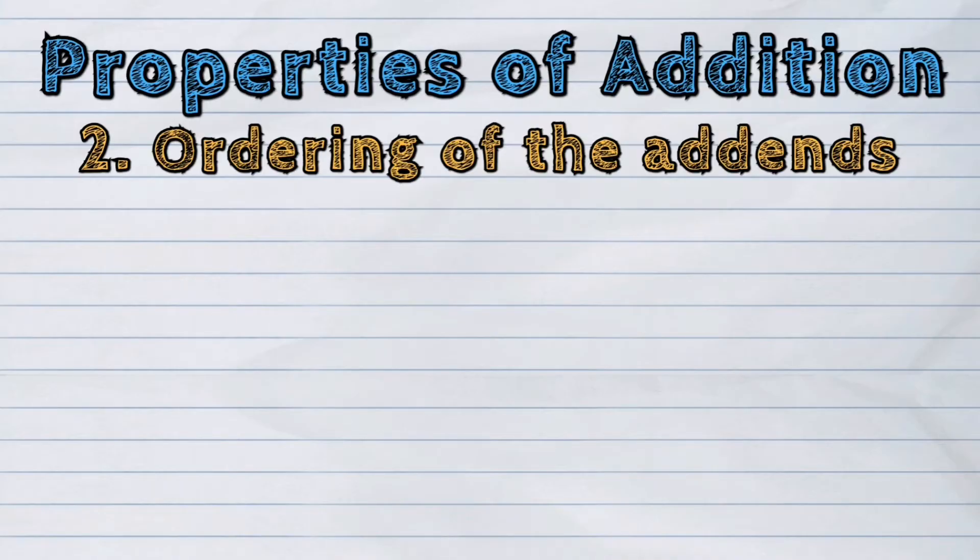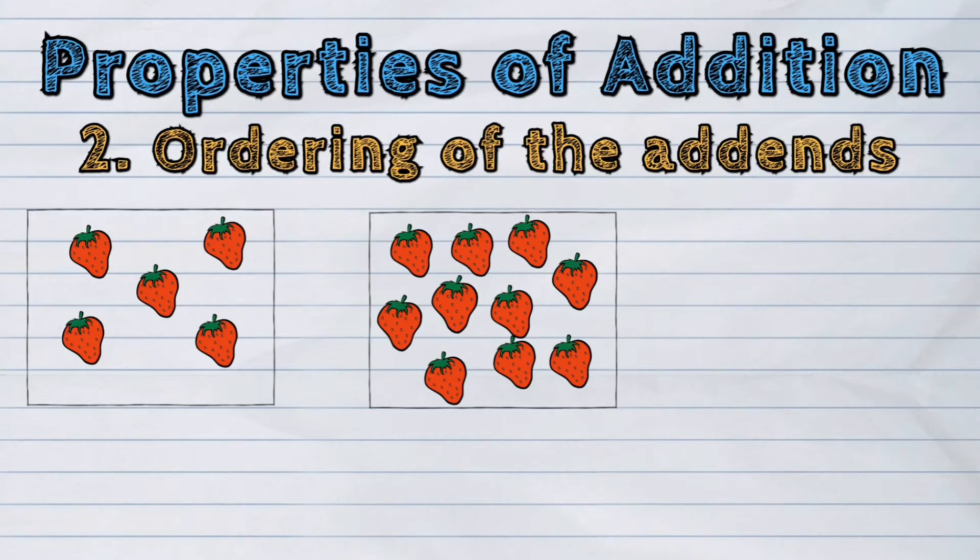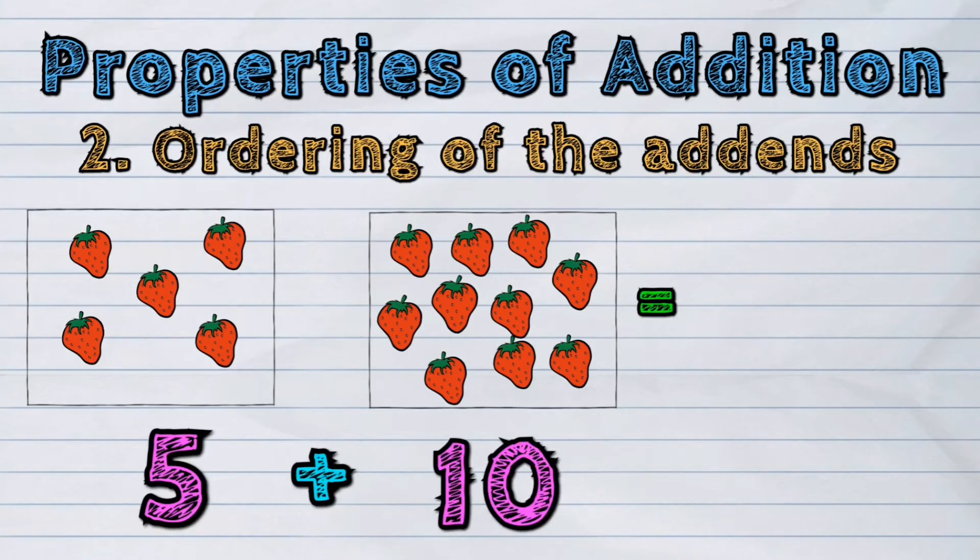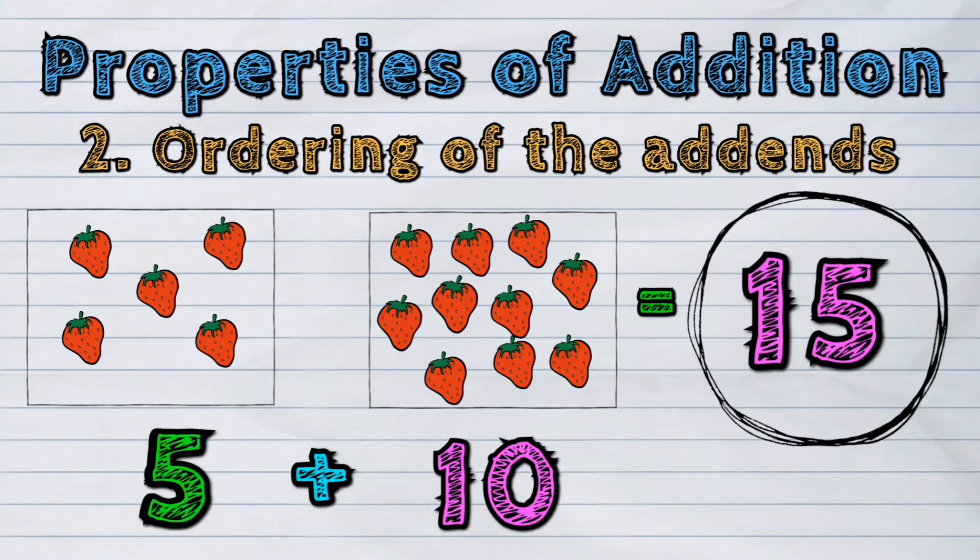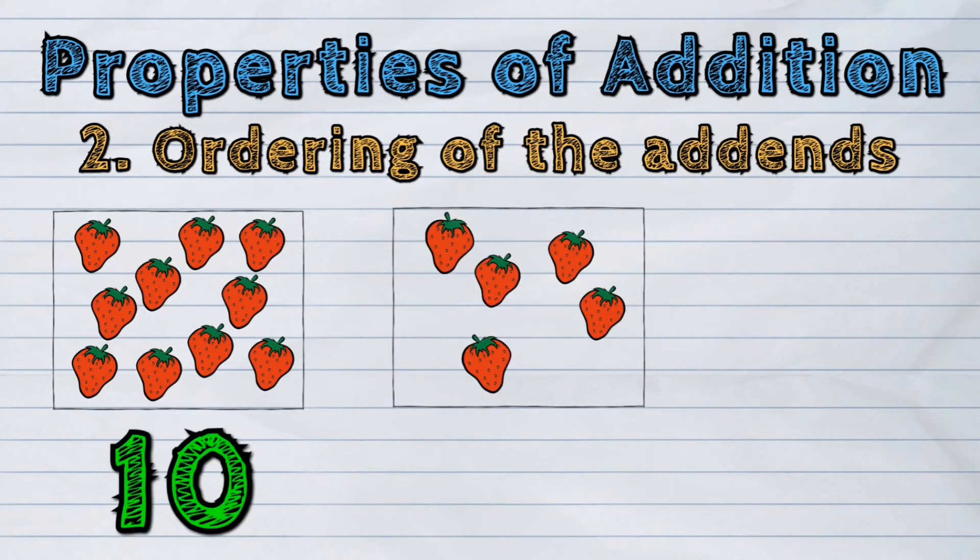Let us study this example. 5 plus 10 is 15. So, there are 15 strawberries in all if we put together 5 strawberries and 10 strawberries. How about 10 plus 5 is 15?